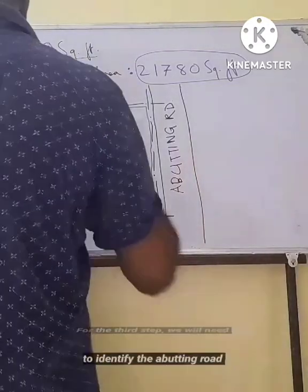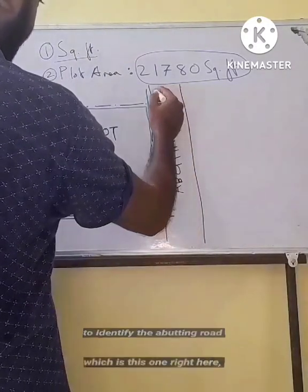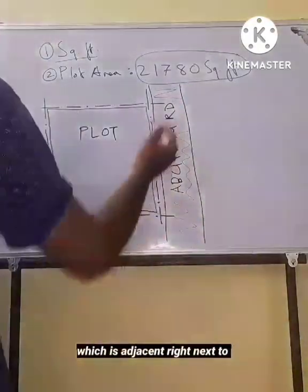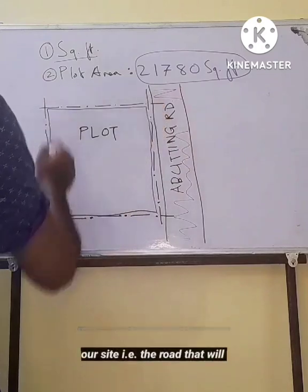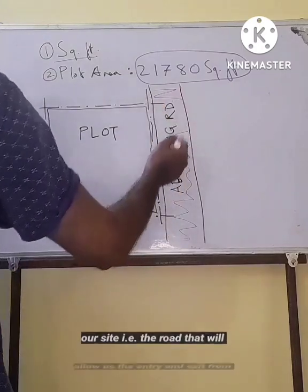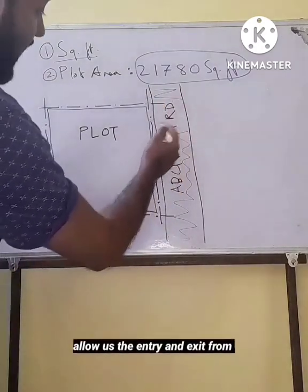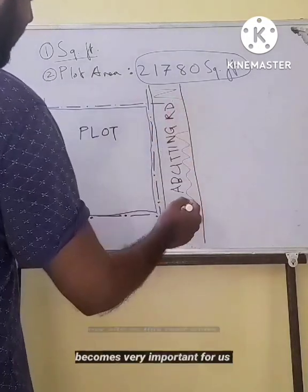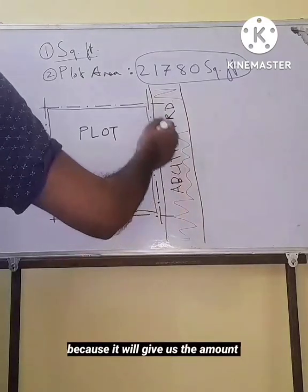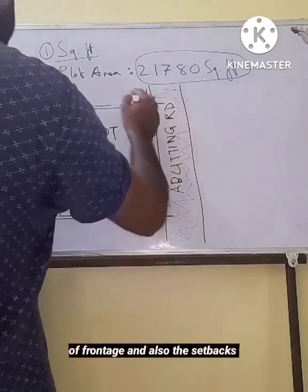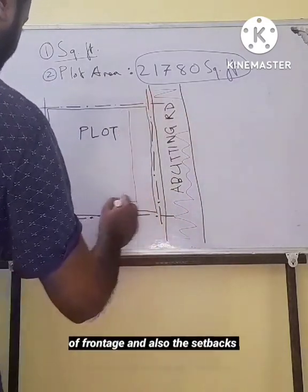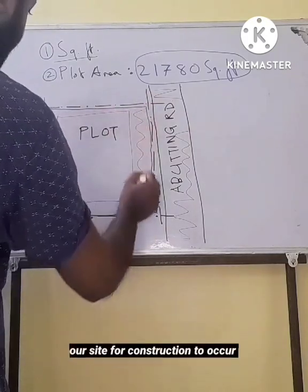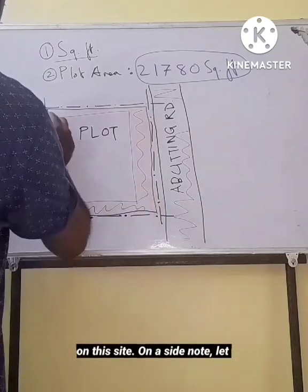For the third step we will need to identify the abutting road which is adjacent right next to our site. That is the road that will allow us the entry and exit from our site. This road is very important because it will give us the amount of frontage and also the setbacks that we need to keep all around our site for construction to occur.